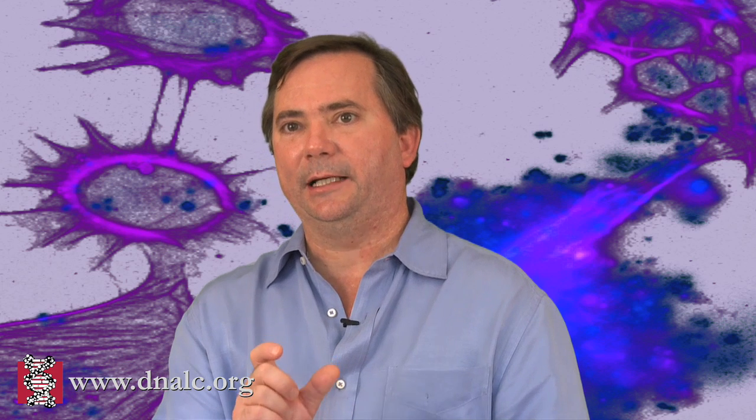Not only do prairie voles with longer sequences have more receptors, but they're more likely to bond, more likely to be better fathers, and more likely to engage other individuals socially. So here's an example of where a stretch of DNA — a stretch of nucleotides, A's, G's, C's, and T's — can vary across individuals and produce a striking difference in their social behavioral traits.